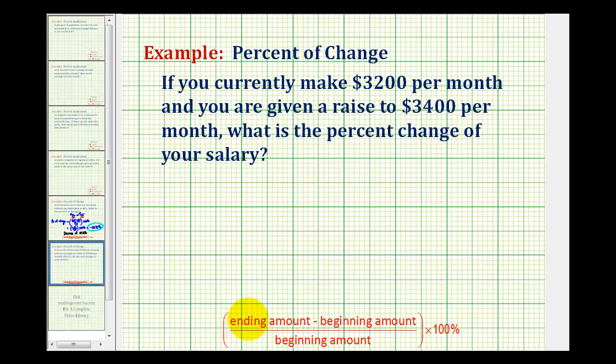Here's the percent of change formula below in red. Let's gather our information. The beginning amount is $3,200 and the ending amount would be $3,400.